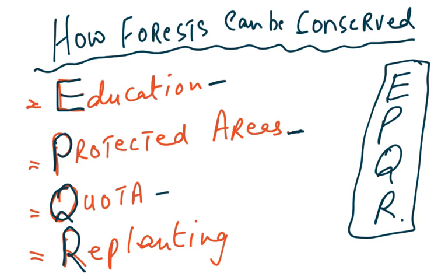A quota should be fixed: you can cut down a set number of trees, and then you plant replacements so that within five or ten years, the same number of trees will be there again. Trees take many years to grow to a height at which they can be cut down for firewood, furniture, or similar uses. So a quota restricts the number of trees that can be cut in a given period. Then comes the most important thing: replanting. If you cut down trees, you need to replant more, so the next year those will have grown, and in three or four years there will be no shortage of trees. Replanting is a major factor in conservation of forests.